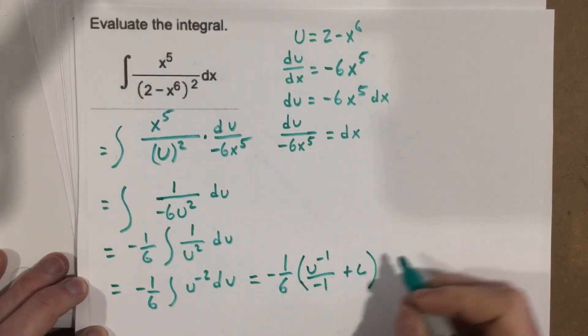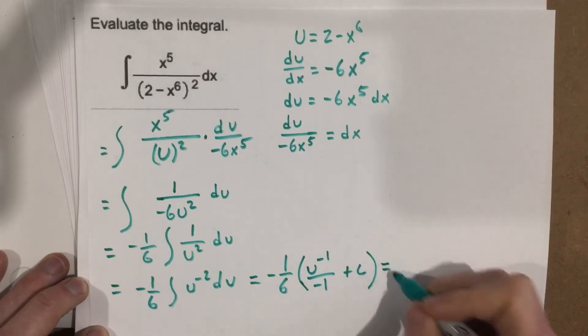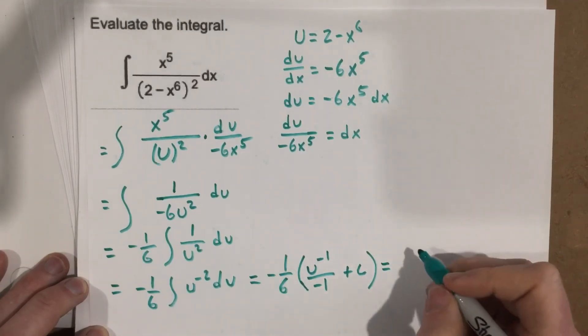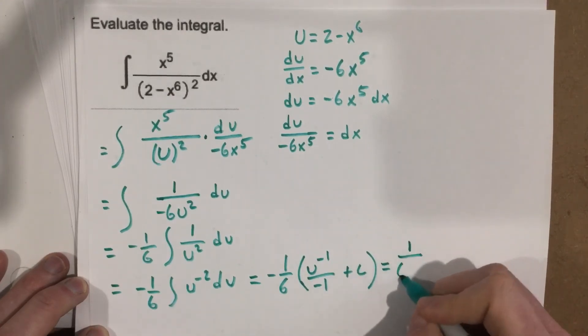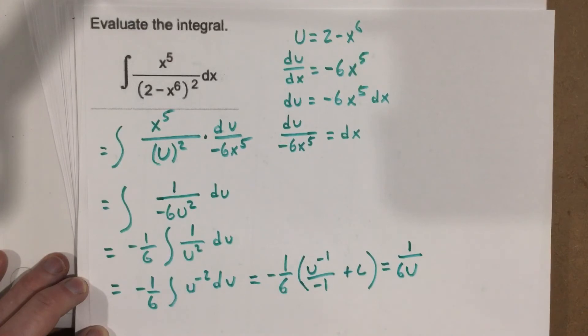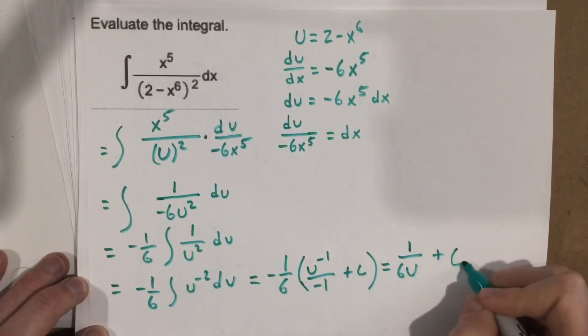We can distribute that negative one-sixth, and we'll get—well, the negatives cancel there. And we can also bring that to the bottom, so we get 1 over 6u. And remember, the negative one-sixth times a constant—constant times constant—it's just another constant.